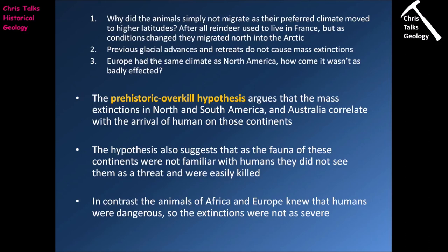There are also problems with the climate change hypothesis. First, why didn't the animals simply migrate as their preferred climate moved to higher latitudes? After all, reindeer used to live in France but migrated north as conditions changed. Second, previous glacial advances and retreats did not cause mass extinctions, so why did this one? Third, Europe had the same climate as North America, so why wasn't Europe as badly affected in terms of large mammal losses? This brings us to the prehistoric overkill hypothesis, which argues that the mass extinctions in North and South America and Australia correlate with the arrival of human beings on those continents — the fauna of these continents were not familiar with humans, didn't see them as a threat, and were easily killed. In contrast, the animals of Africa and Europe knew humans were dangerous, did their best to avoid us, and so extinctions there were far less severe.